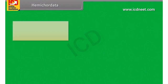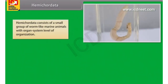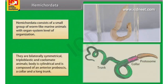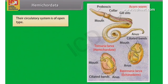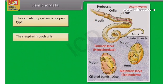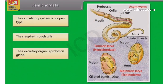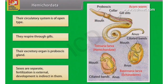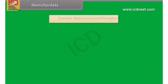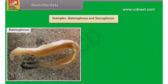Hemichordata consists of a small group of worm-like marine animals with organ system level of organization. They are bilaterally symmetrical, triploblastic and coelomate animals. Body is cylindrical and is composed of an anterior proboscis, a collar and a long trunk. Their circulatory system is of open type. They respire through gills. Their excretory organ is proboscis gland. Sexes are separate. Fertilization is external. Development is indirect. Examples: Balanoglossus and Saccoglossus.